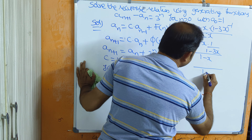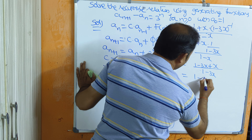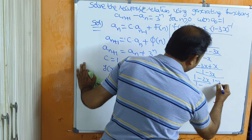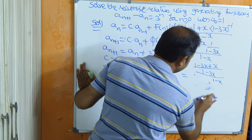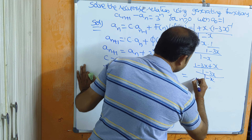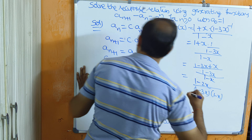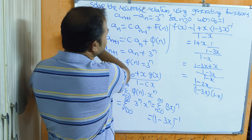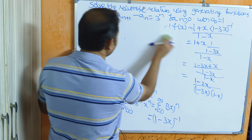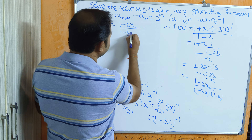Let us calculate the LCM. Taking LCM of (1-3x), the numerator becomes (1-3x) plus x, giving (1-2x). So f(x) equals (1-2x) divided by (1-3x)(1-x).